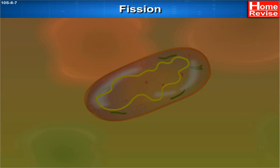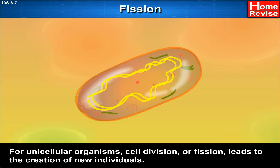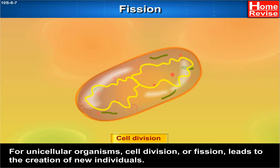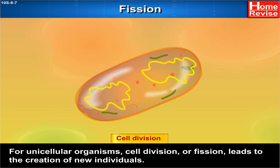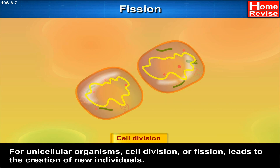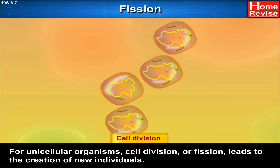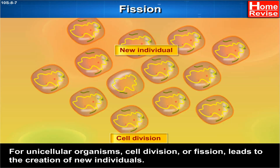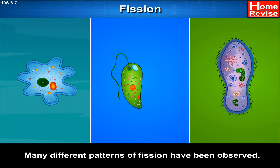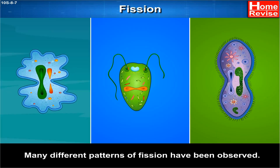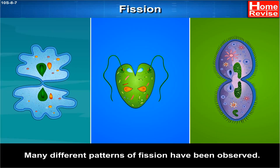Fission. For unicellular organisms, cell division or fission leads to the creation of new individuals. Many different patterns of fission have been observed.